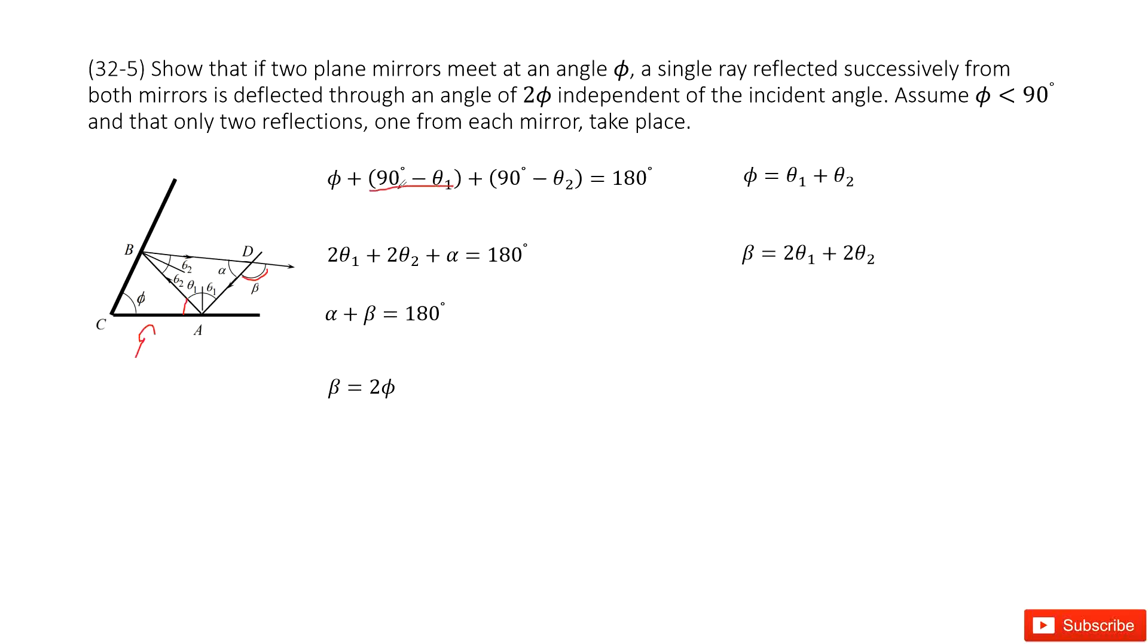So this one is 90 degrees minus theta 1. Similarly, this light wave just reflects at mirror B at point B. This incident wave is theta 2, so this angle should be 90 degrees minus theta 2.